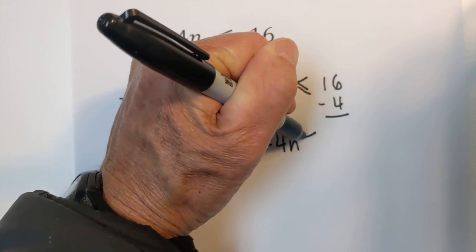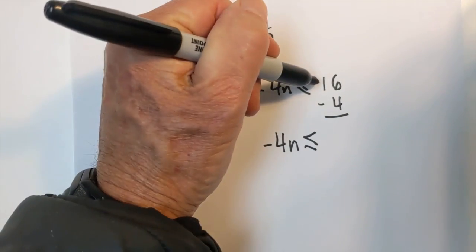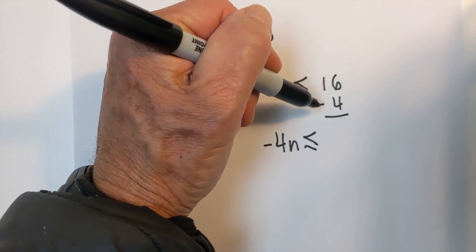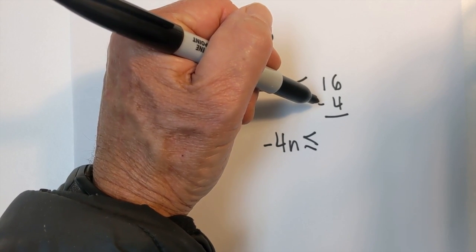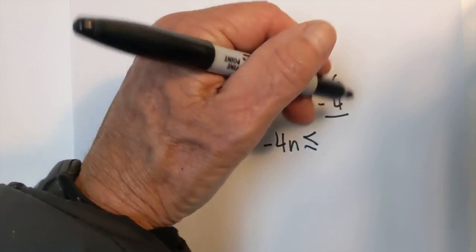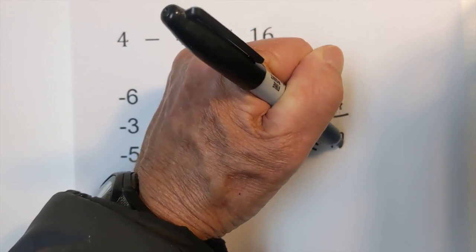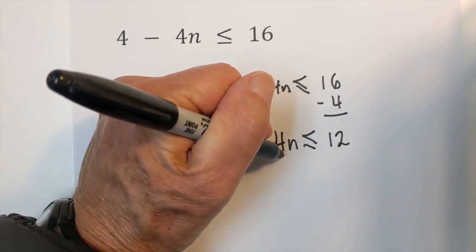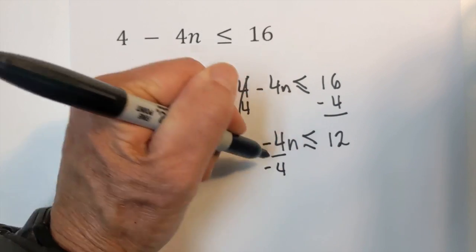You have negative 4n is less than or equal to 16 minus 4. Whenever you have a positive and negative you keep the sign of the larger and subtract so that will be a positive 12. Now we need to divide by a negative 4.